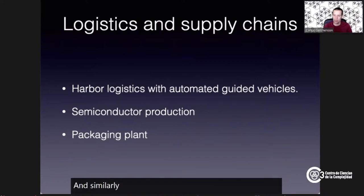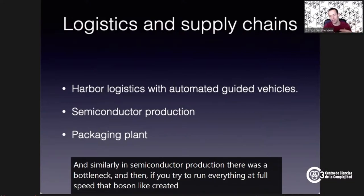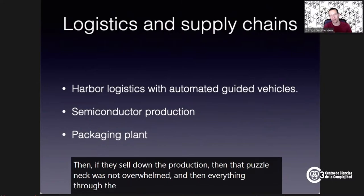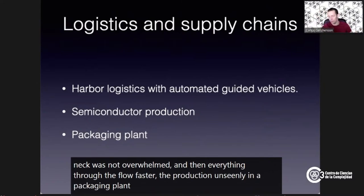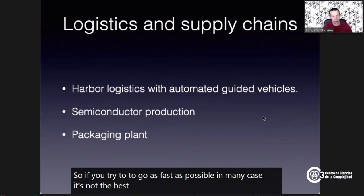Similarly, in semiconductor production there was a bottleneck. If you tried to run everything at full speed, that bottleneck created huge delays. When they slowed down production, the bottleneck was no longer overwhelmed and everything flowed faster. The same applies in a packaging plant — if you try to go as fast as possible, in many cases it's not the best solution and can actually be counterproductive.